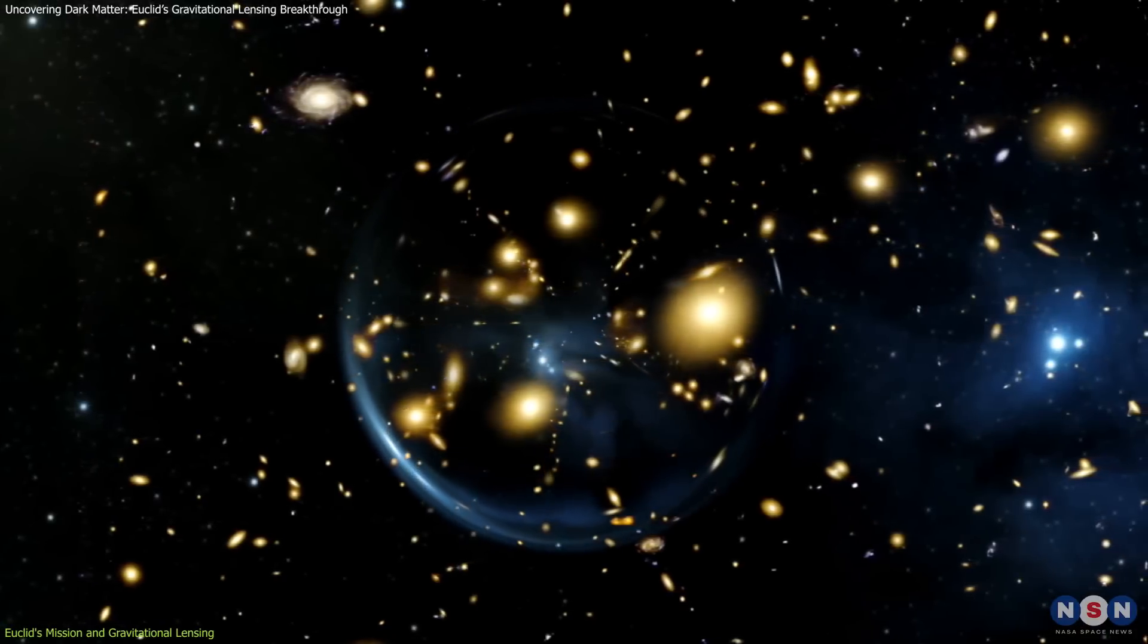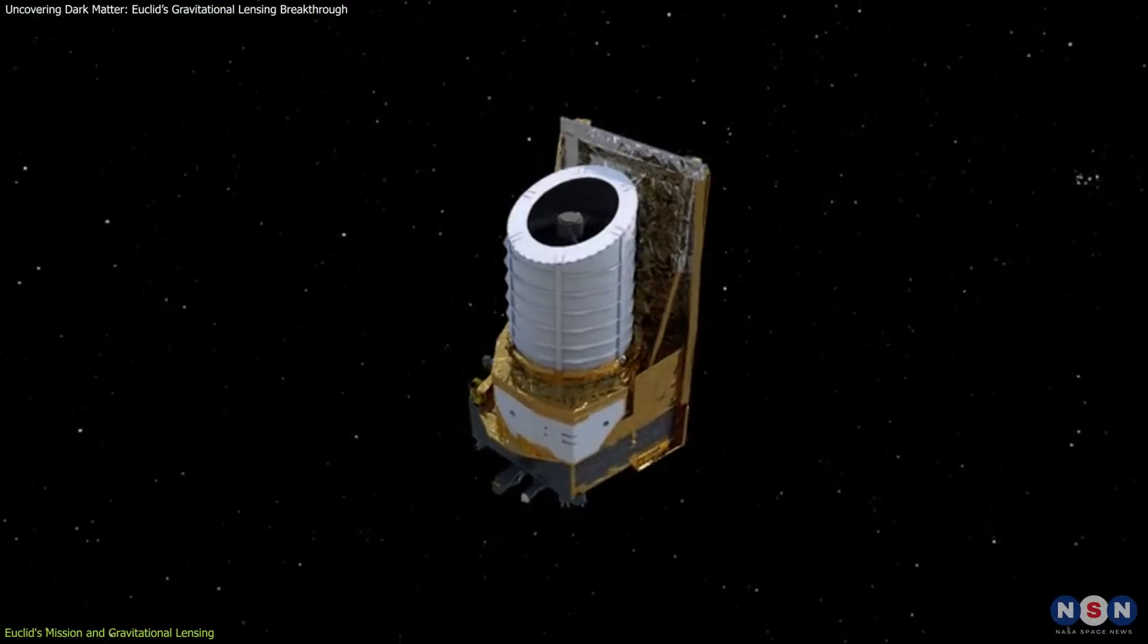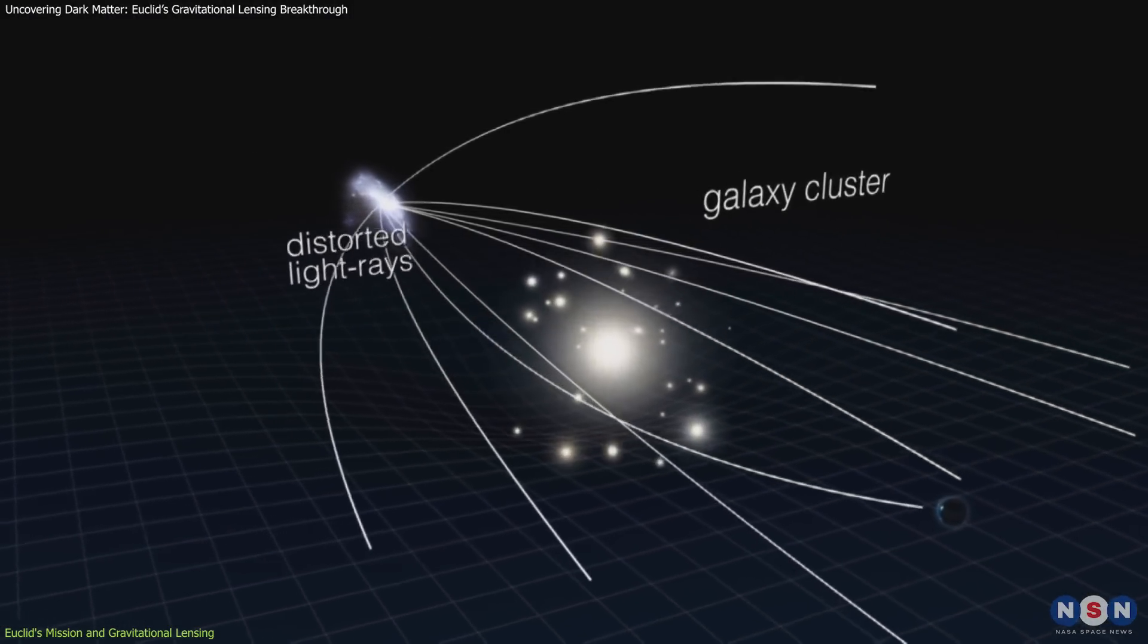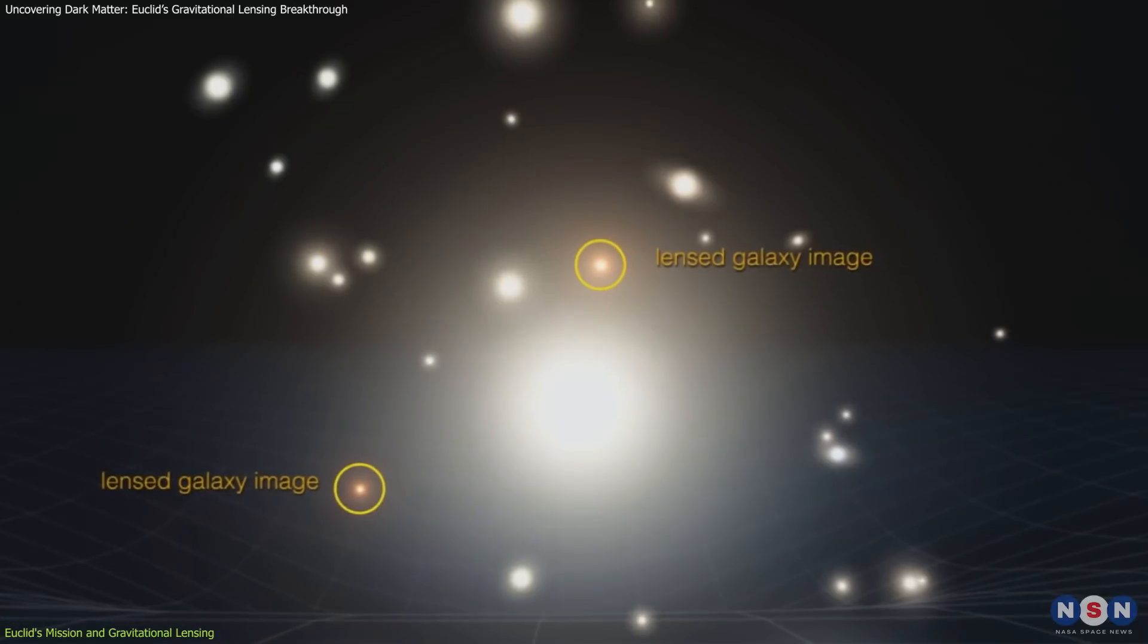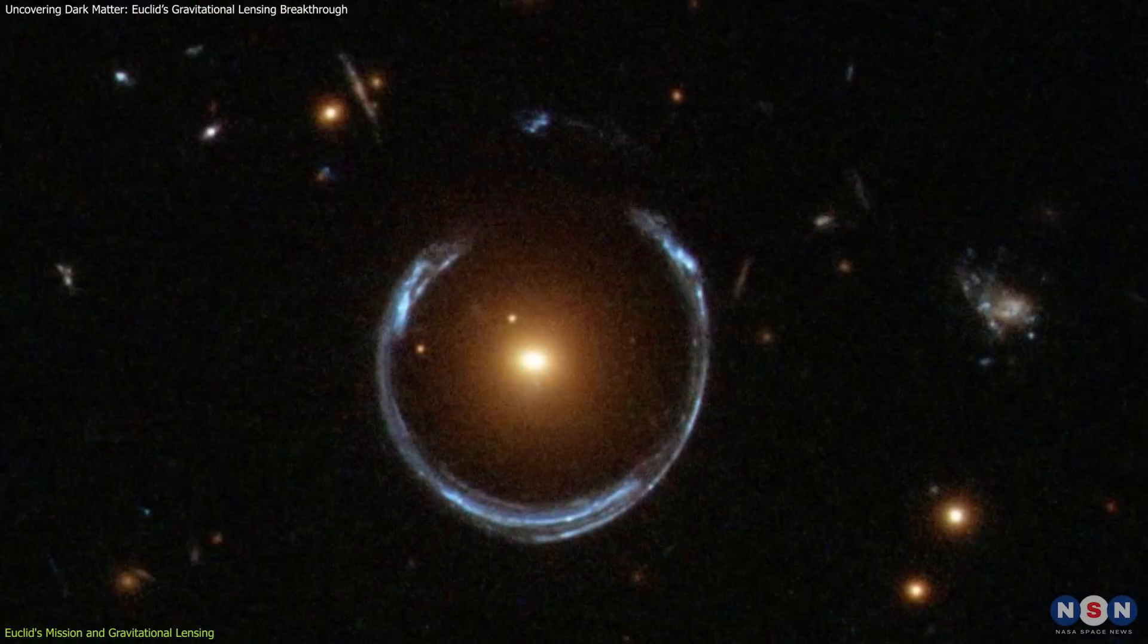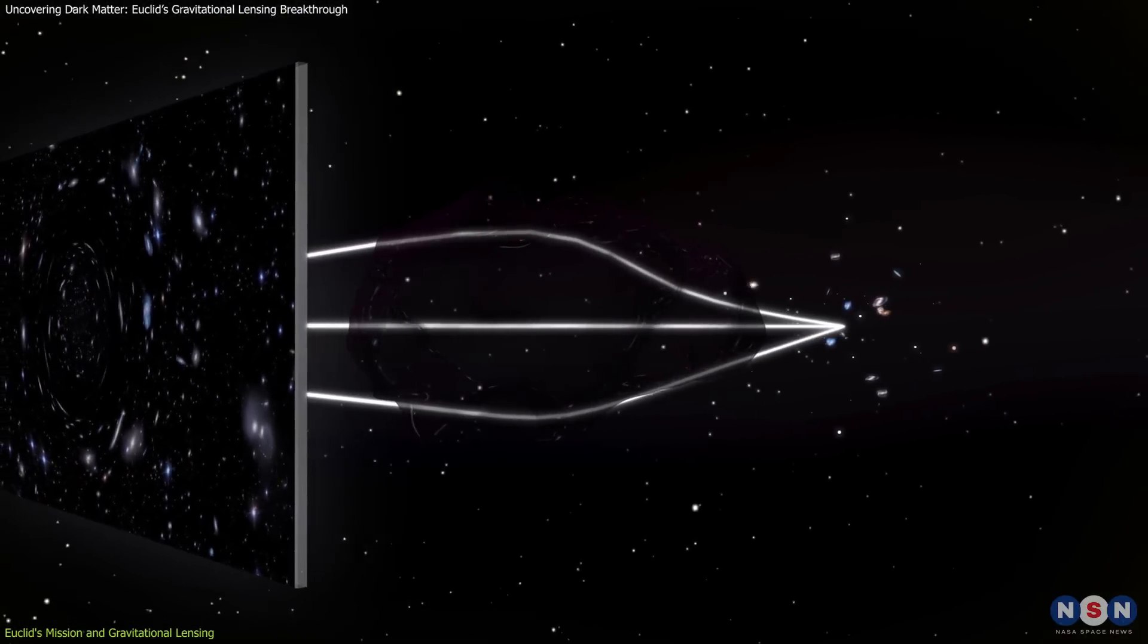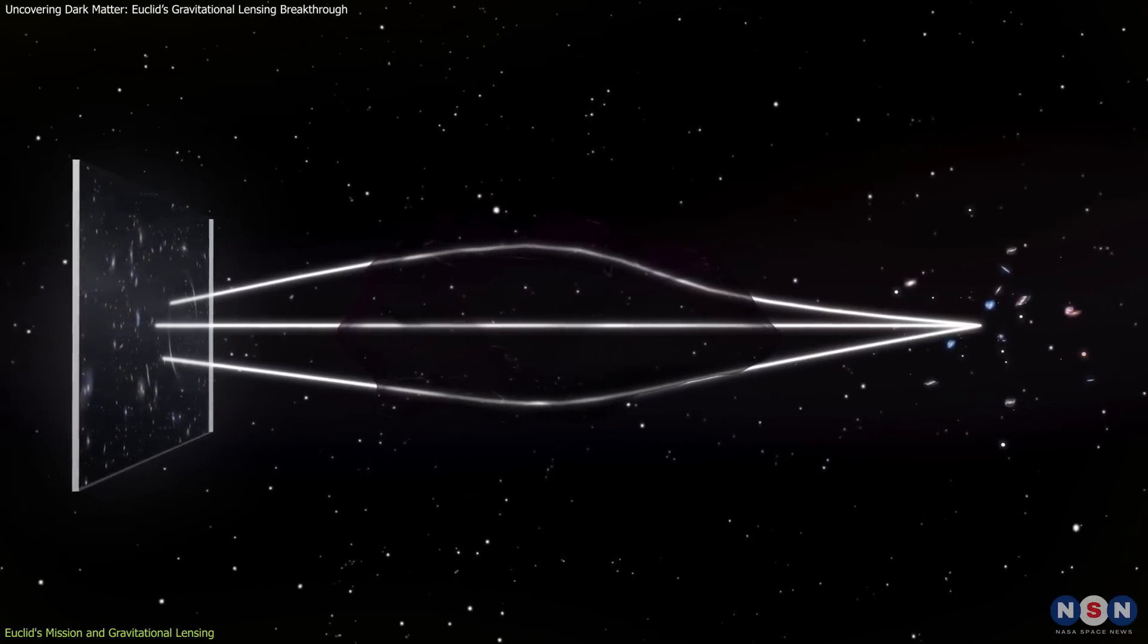Gravitational lensing, a phenomenon predicted by Einstein's general relativity, is central to Euclid's methodology. Massive celestial objects warp the fabric of space-time, bending light from more distant sources. This effect not only magnifies these distant objects, but also distorts their appearance into arcs, multiple images, or complete Einstein rings. By analyzing these distortions, scientists can infer the distribution of dark matter, an invisible but gravitationally influential component that shapes the cosmos.